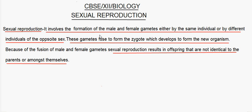Sexual reproduction involves the formation of the male and female gametes either by the same individual or by different individuals of the opposite sex. These gametes fuse to form the zygote which develops to form the new organism. Because of the fusion of the male and the female gametes, sexual reproduction results in offspring that are not identical to the parents or amongst themselves.